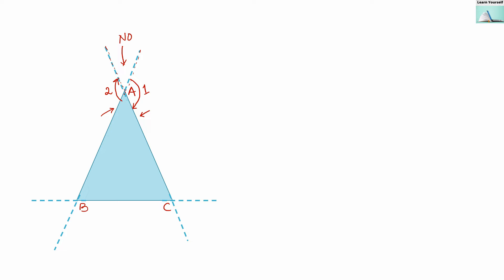Similarly, at vertex B, if I extend line segment AB like this, I will get the third exterior angle. At the same vertex B, if I extend line segment BC like this, I will get the fourth exterior angle. With vertex C, if I extend line segment AC I get the fifth exterior angle, and if I extend BC I get the sixth exterior angle. So at each vertex we get two exterior angles.